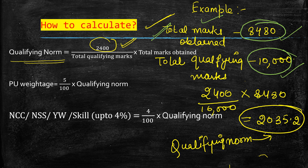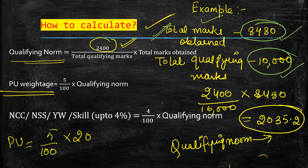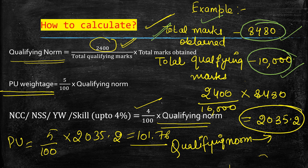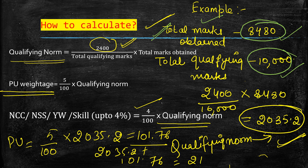If you are eligible for PU weightage — meaning your graduation or post-graduation was from Panjab University or a PU-affiliated college — the formula is: (5 ÷ 105) × Qualifying Norm. So (5 ÷ 105) × 2035.2 = 96.9 (approximately 101.76). Similarly, calculate NSS or NCC weightage if you have those certificates and add all to the qualifying norm: e.g., 2035.2 + 101.76 = 2136.96. That is your total score.